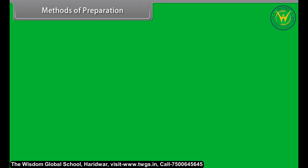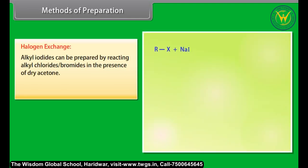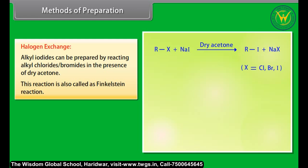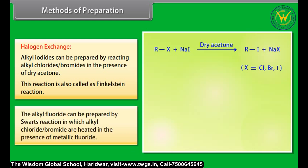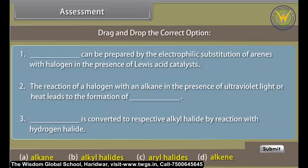By halogen exchange: alkyl iodides can be prepared by reacting alkyl chlorides or bromides in the presence of dry acetone. This reaction is also called the Finkelstein reaction. Alkyl fluorides can be prepared by the Swartz reaction, in which alkyl chlorides or bromides are heated in the presence of a metallic fluoride.